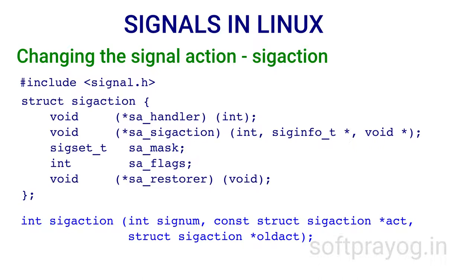The sigaction system call is for changing the action taken on receipt of a signal. The first parameter is signum, which can be any signal except SIGKILL and SIGSTOP. The second parameter ACT is a pointer to a struct sigaction for the new action for signal signum. In struct sigaction, the first two members are SA_Handler and SA_SIGACTION, which are mutually exclusive — only one is used. If SA_SIGINFO is specified in SA_FLAGS, SA_SIGACTION is used; otherwise SA_Handler is used. For real-time signals, use SA_SIGACTION; otherwise use SA_Handler.